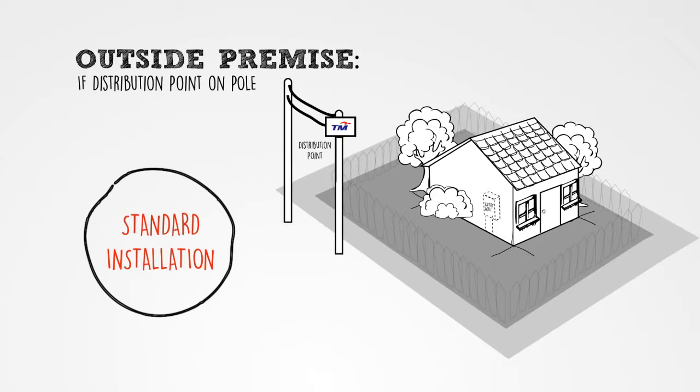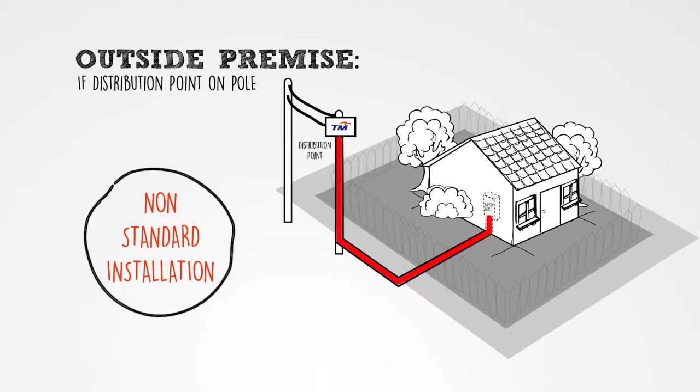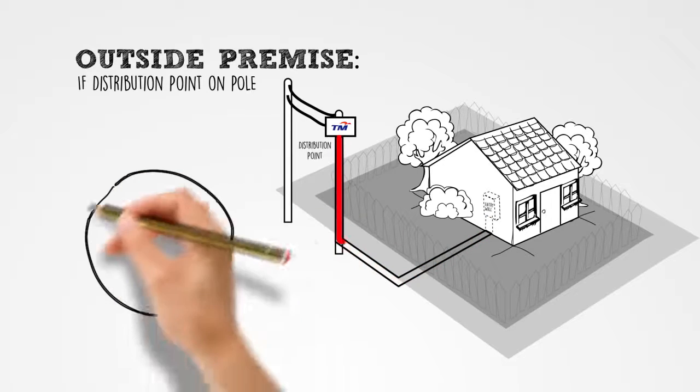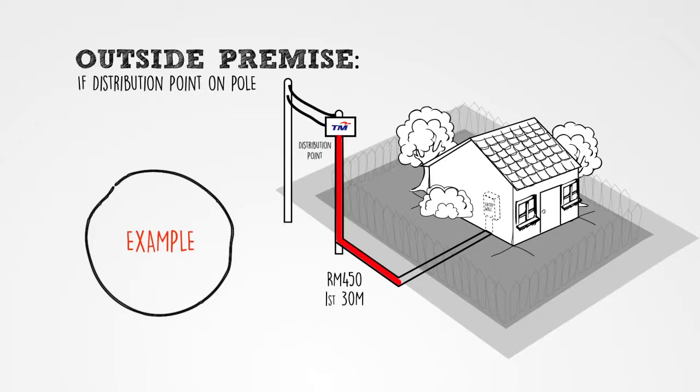If you request to pull the cable from pole to entry wall through underground wiring, this is also considered as a non-standard installation, which will require you to bear the cost depending on ducting length from the nearest pole to your entry wall. The first 30 meters will be charged RM450, an additional length at RM6 per meter.